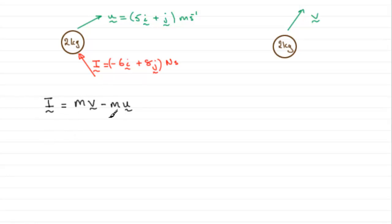I'm going to write in column vector form. For I, we've got (-6, 8), and that is equal to the mass, which we know is 2 kilograms, multiplied by v. I don't know what v is, so I can't write that yet. It's a column vector minus mu, so that's going to be 2 multiplied by u, which is (5, 1).